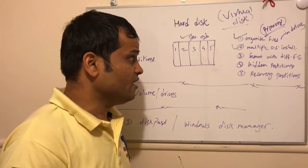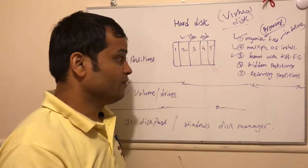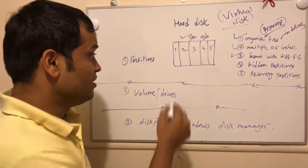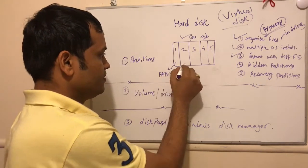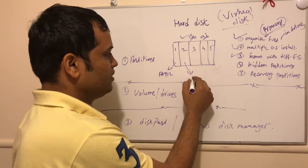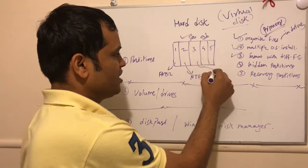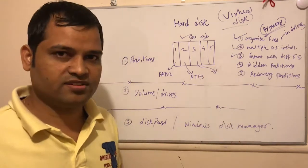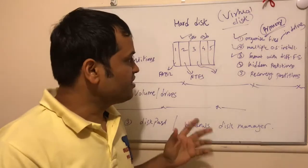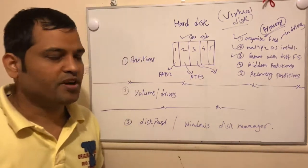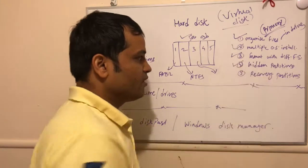Another thing to note is that we can format these partitions with different file systems. For example, partition one can have FAT32, partition two can be formatted with NTFS, and partition three can be formatted with another file system used by Linux or any other operating system. That is another advantage of having partitions on a disk.